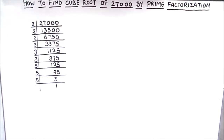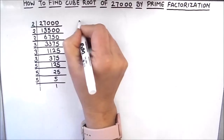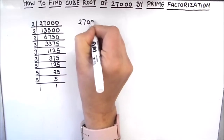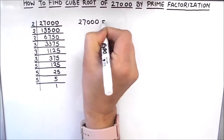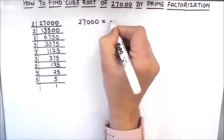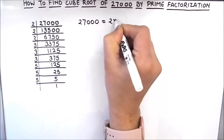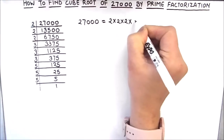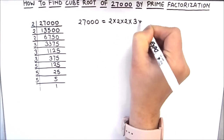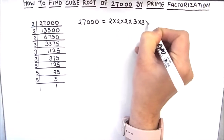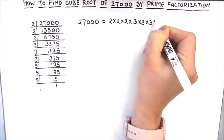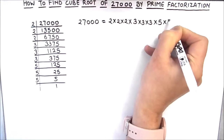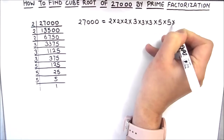So now our number is fully divided. We will write the number as the product of its prime factors, which is 2 × 2 × 2 × 3 × 3 × 3 × 5 × 5 × 5.